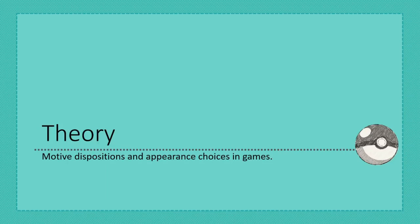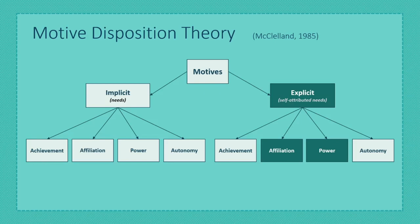Motive disposition theory is a theory concerned with individual motivations. These are called motives and they drive our behavior. They can help us explain why different players make different choices and enjoy different things. We distinguish implicit and explicit motives in the domains of achievement, affiliation, power, and autonomy. Our focus is on the two social motives: affiliation and power.